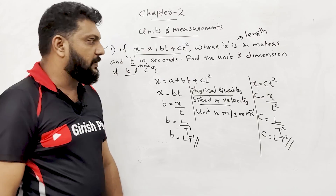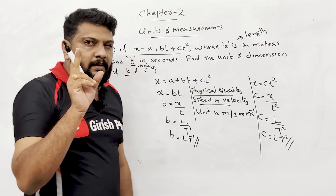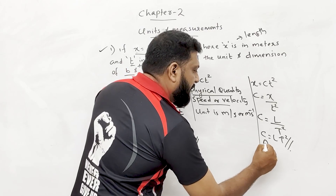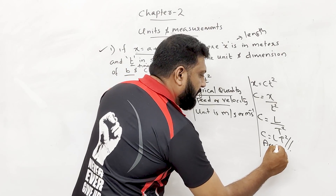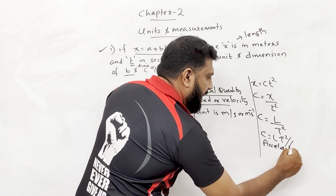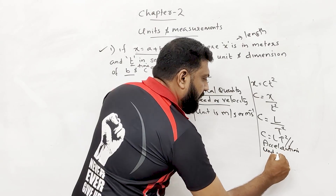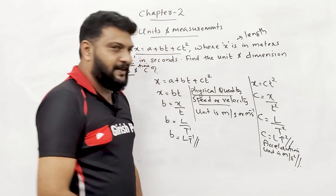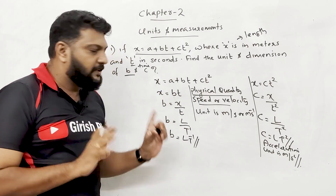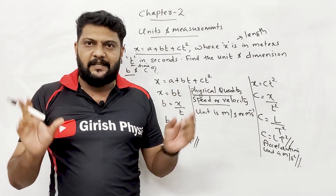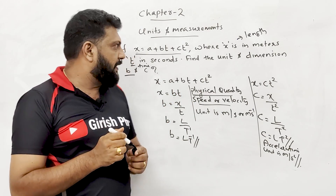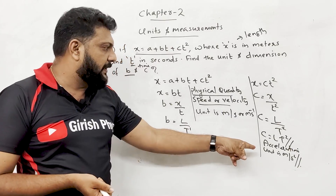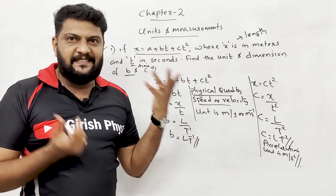L·T⁻² — what physical quantity is this? Acceleration! Unit is meter per second squared. So: b has dimension L·T⁻¹ (velocity/speed, unit: m/s) and c has dimension L·T⁻² (acceleration, unit: m/s²).